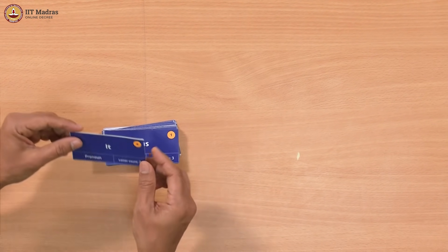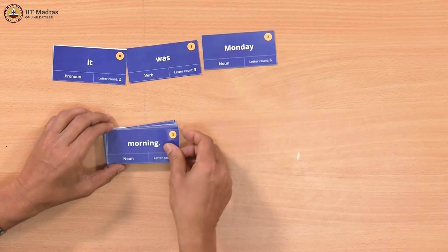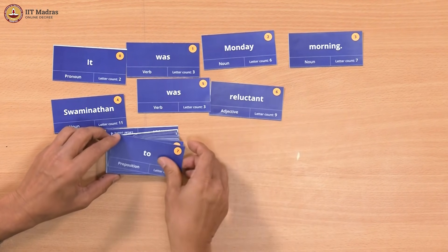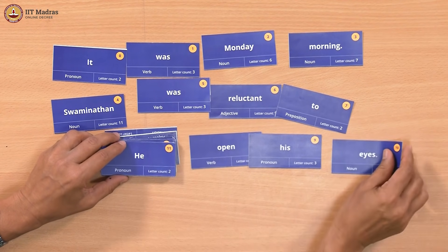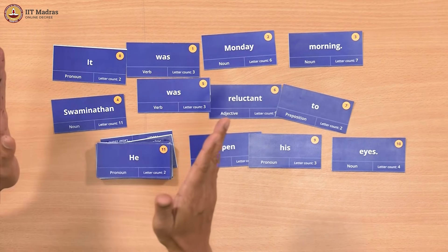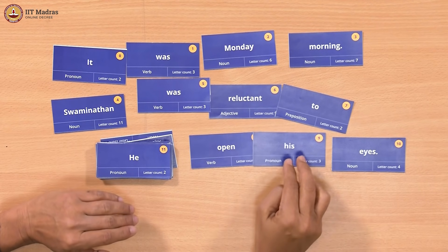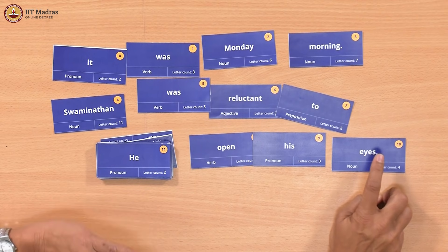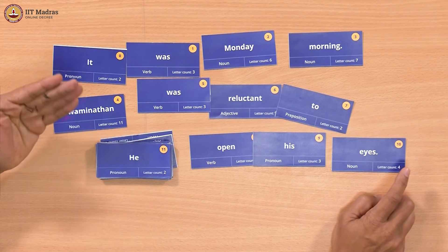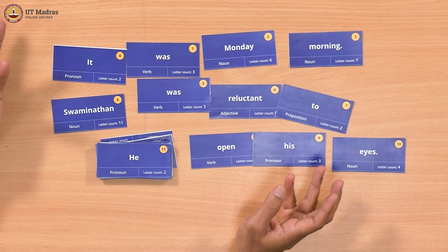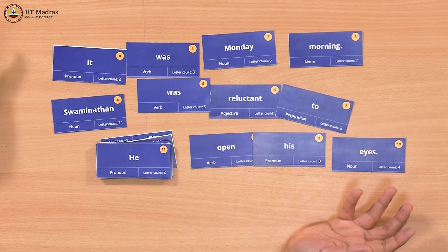If you remember the paragraph, it started off with 'it', 'was', 'Monday', 'morning' — these are the first four cards. 'Swaminathan was reluctant to open his eyes.' This is just a systematic way in which we have taken the paragraph and broken it up into single words. We have taken the punctuation, for example the full stop, and put it along with the words so that it is not separated out. What we can now do is ask questions about these words, for instance how many nouns are there, how many verbs are there, which is the longest word, how many sentences are there. This will be our third dataset on which we will illustrate our computational thinking patterns.